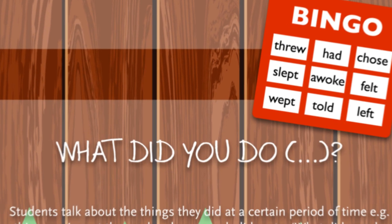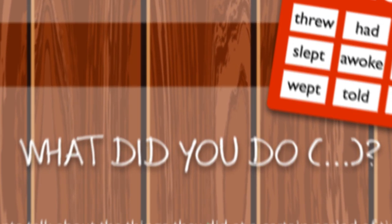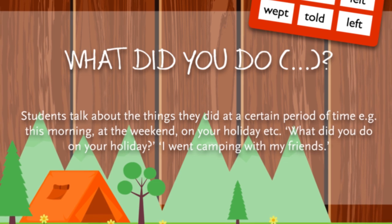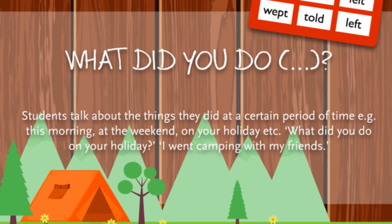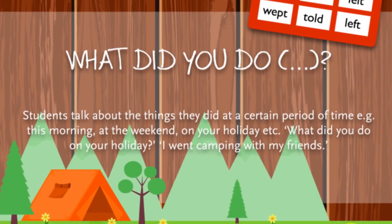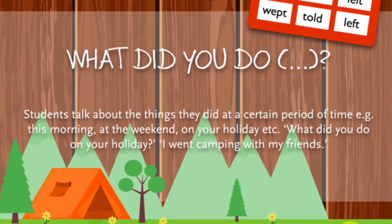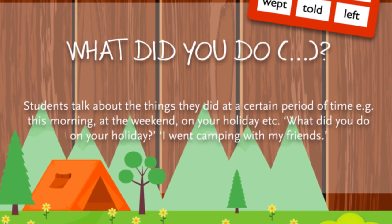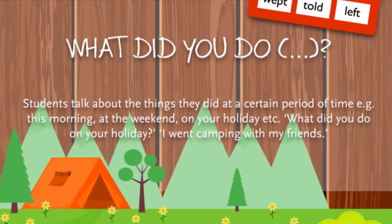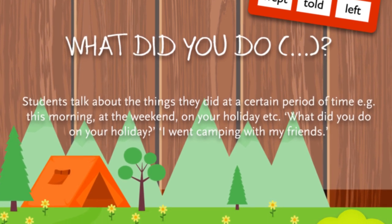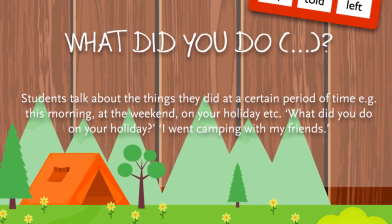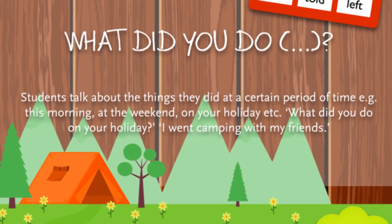What Did You Do? Students talk about the things they did at a certain period of time, for example this morning, at the weekend, on your holiday, and so on. For example: 'What did you do on your holiday?' — 'I went camping with my friends.'